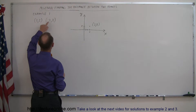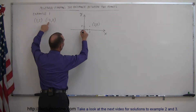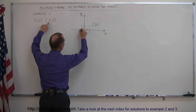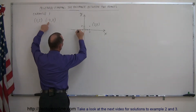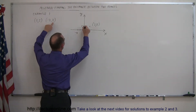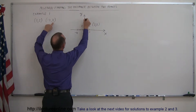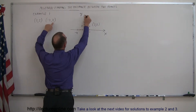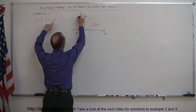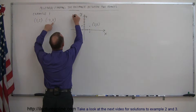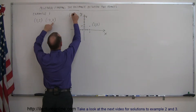Our second point has an x-coordinate of minus 4 and a y-coordinate of 8. Counting over to minus 4 and up to 8 — so when those two meet right there, that's our second point.